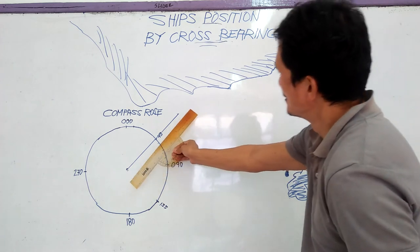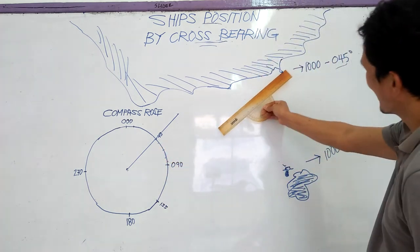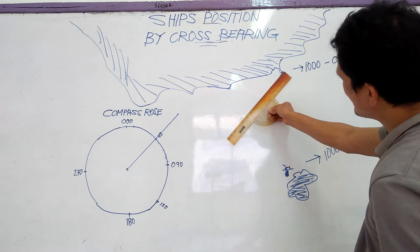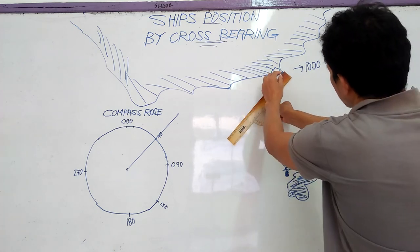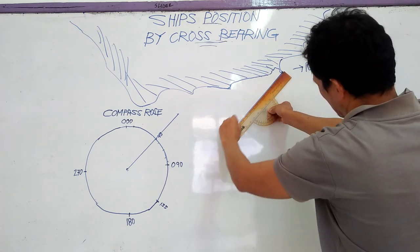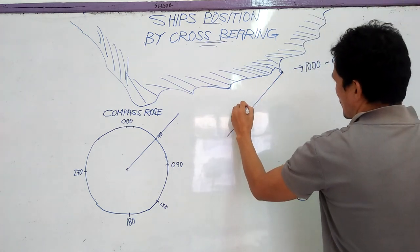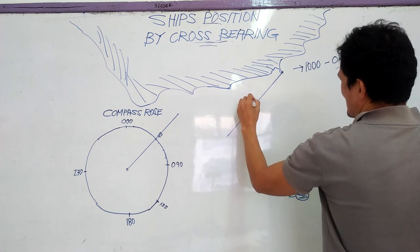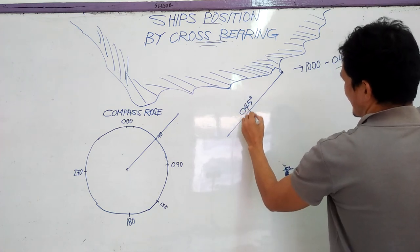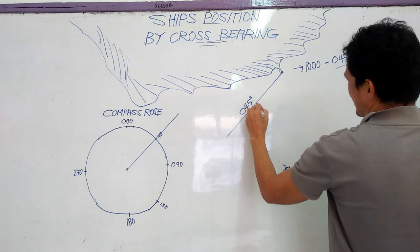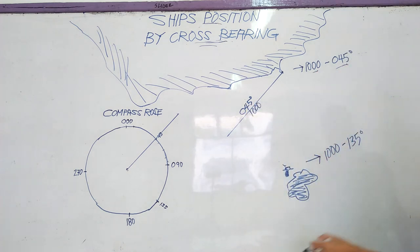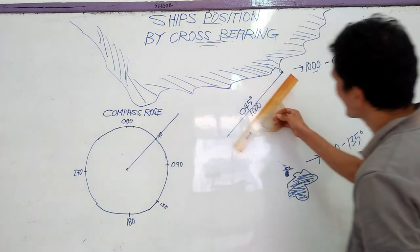Then it should be parallel here. This is 045 degrees at 10. 1045. 045, here 045. And also,